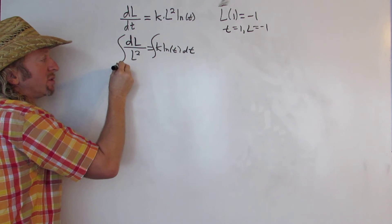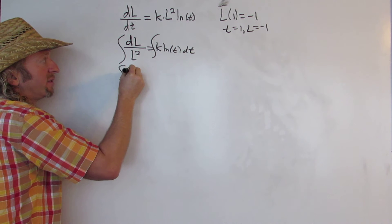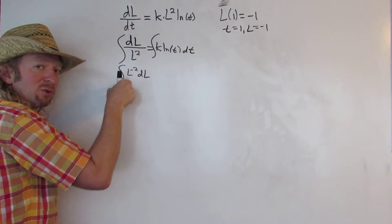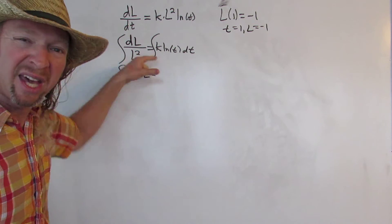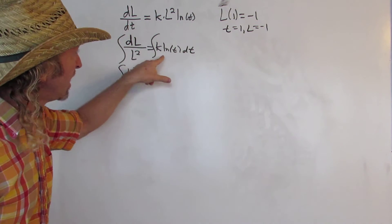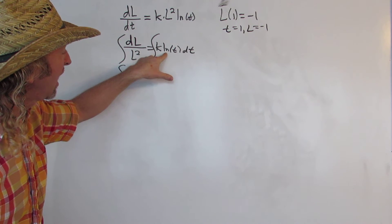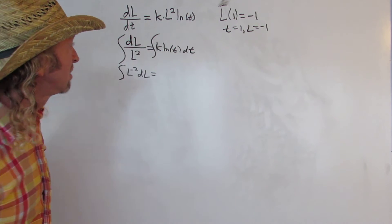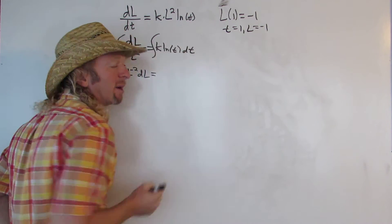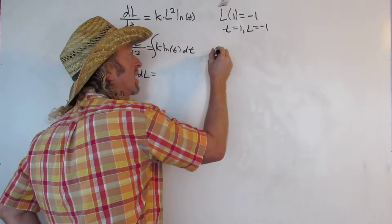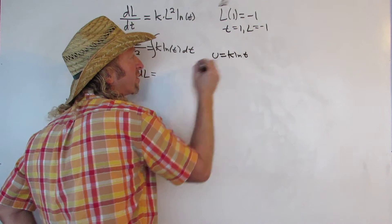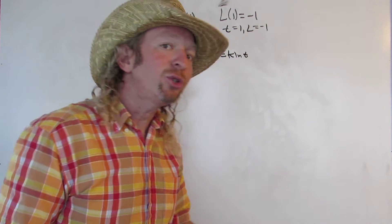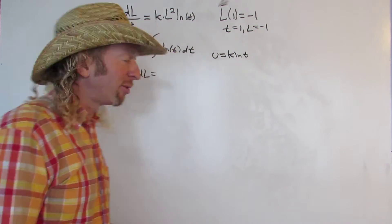To integrate this side, what we can do is we can write it as l to the negative 2 dl and then we can use the power rule. To integrate this, I'll pull the k out. You can leave it in, but let's pull it out. And let's make an integration by parts here. So I'll leave the k in. So we'll let u be equal to k ln t. This is a famous integral. To integrate ln x, you just use parts. Actually have the integral memorized, but let's go through the process just so you learn how to do it.